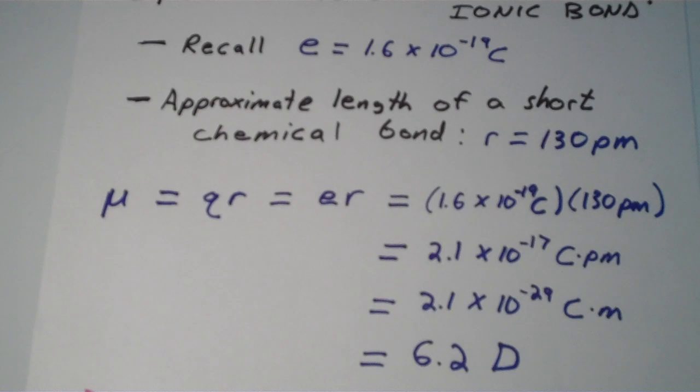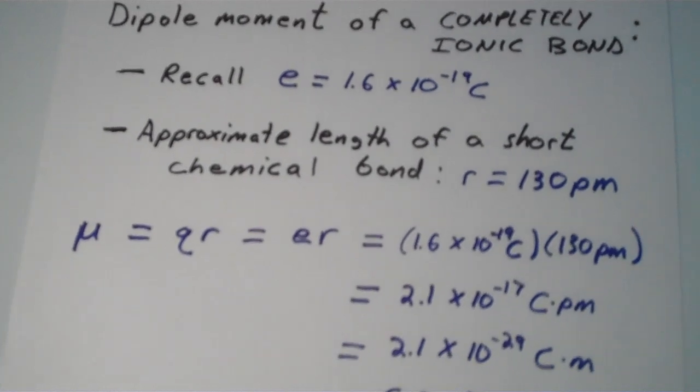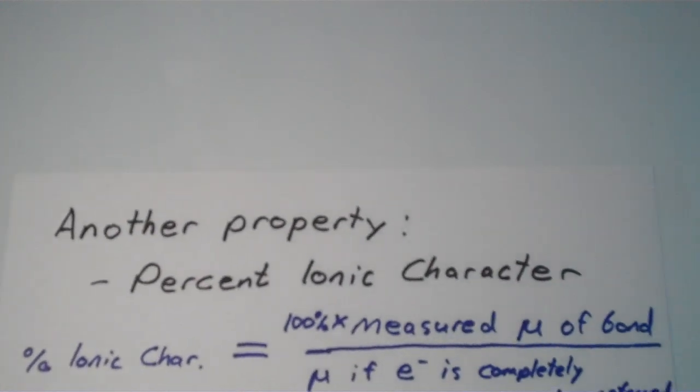Let's shift gears a little bit and discuss another property, just another way to quantify the extent of polarity in a chemical bond. We call it percent ionic character.